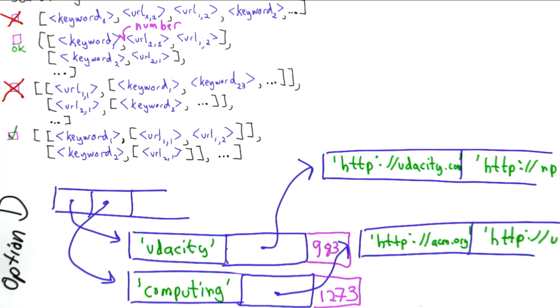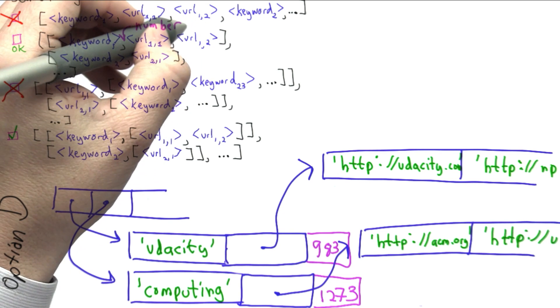We would need to change a lot of code we already wrote. Instead of looking for URLs starting from position 1, we'd have to start from position 2 now. Maybe we should put the number at the end to avoid that problem.